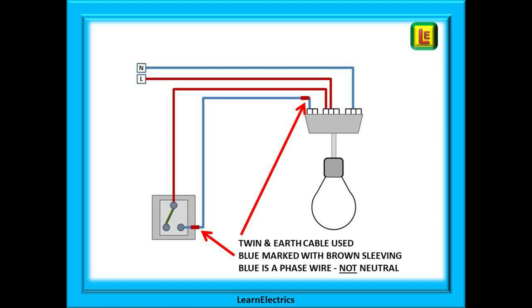Because it can have 230 volts as a phase conductor, we mark it with brown sleeving or brown tape at both ends to help identification.